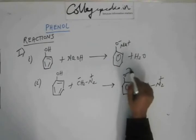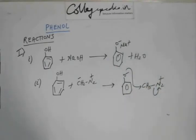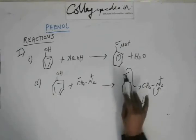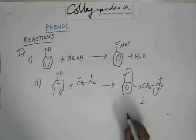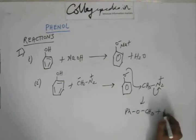Even with the slightest push of this phenoxide ion, this N2 gas will come out because N2 gas is a brilliant leaving group. It's a very, very good leaving group. So N2 gas will come out, this O minus is going to form a bond with carbon. So you are going to get an ether like this.